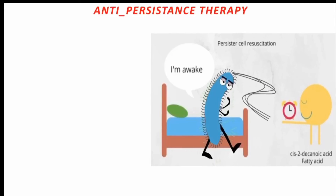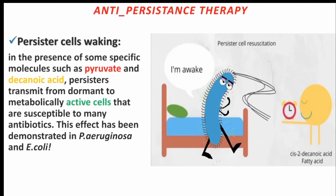Secondly, instead of directly killing our targets, we try to wake them up. In the presence of specific molecules such as pyruvate and decanoic acid, persisters can transition from their dormant phase to metabolically active cells, making them now susceptible to many antibiotics. This effect has been demonstrated in Pseudomonas aeruginosa and E. coli.